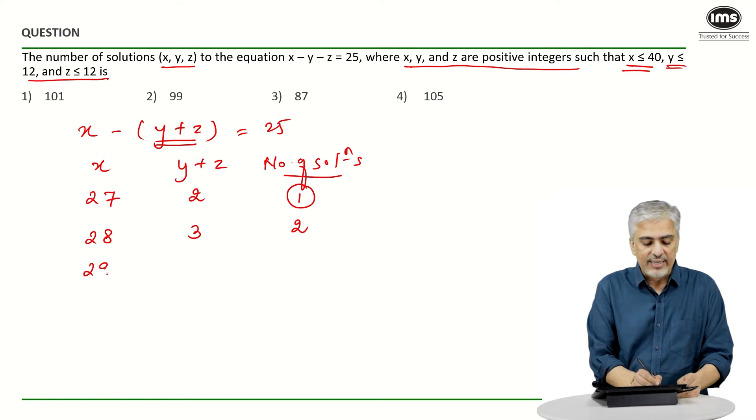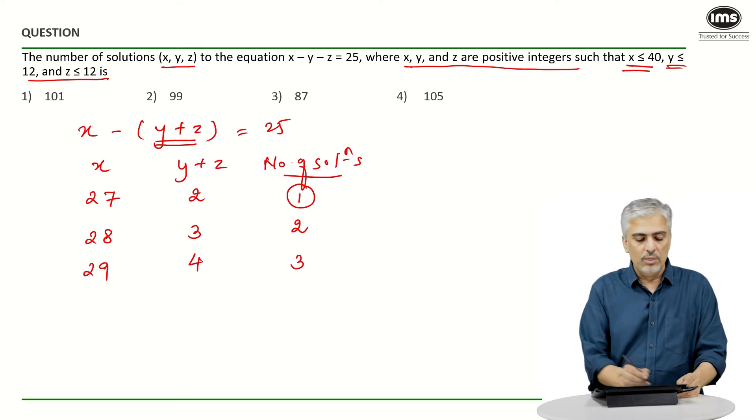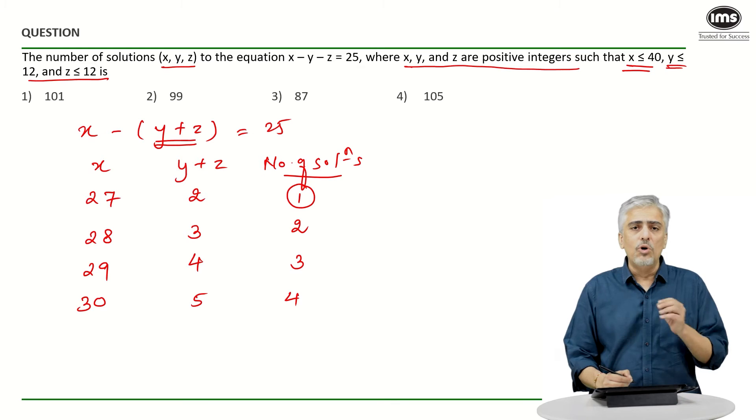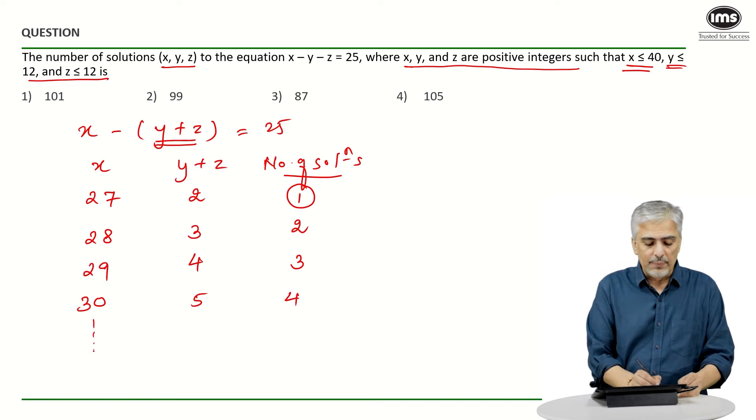And so on. When I have 29, this will be 4, and I can have three solutions. When this is 30, this will be 5, this will be 4 solutions, and so on. Now most probably a very common mistake was made by a lot of students in this question. They would have gone up till 40 this way.